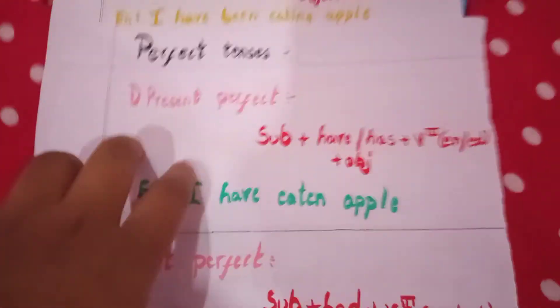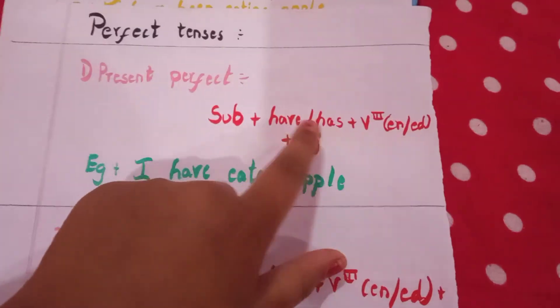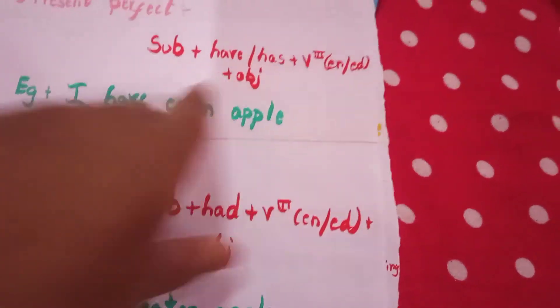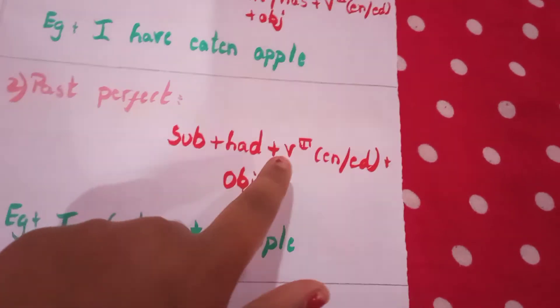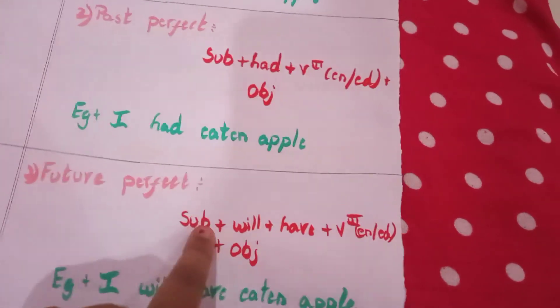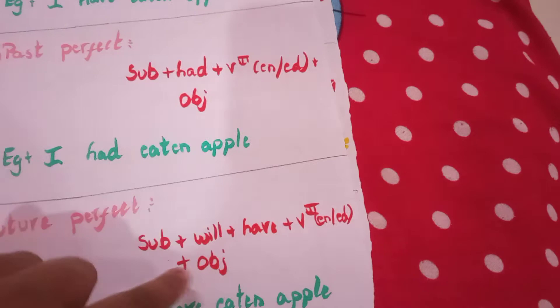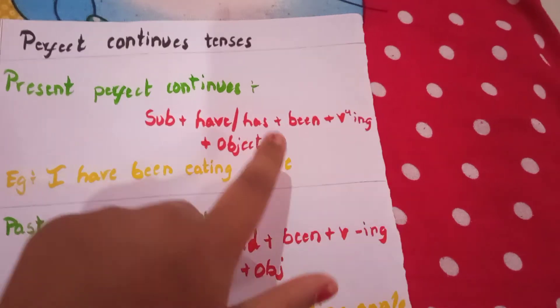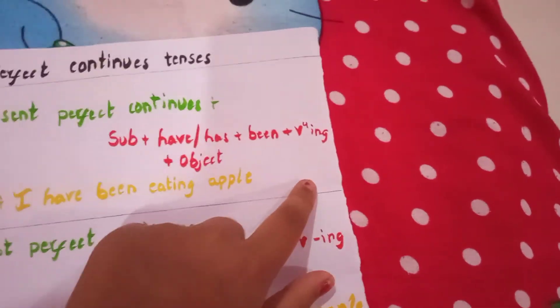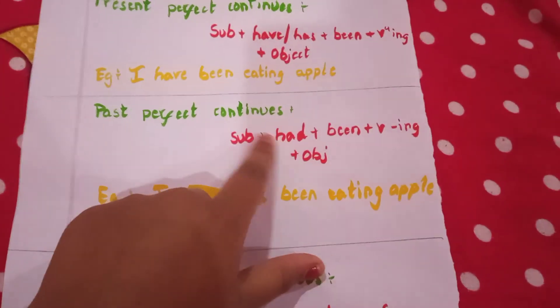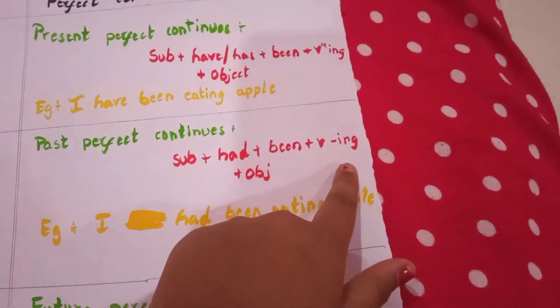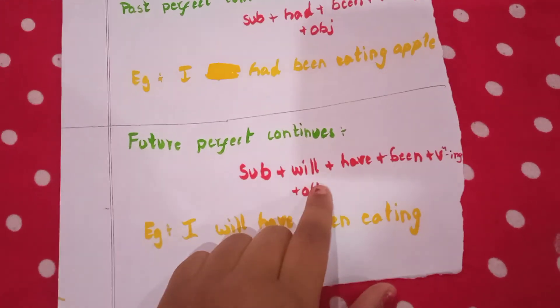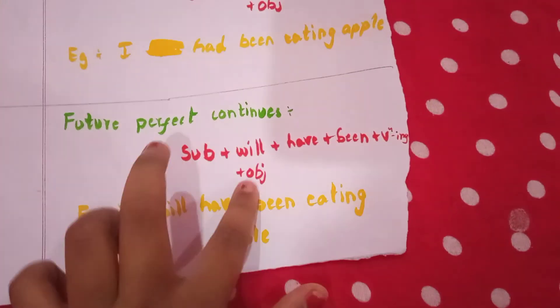Perfect tense — present perfect: subject plus have or has plus V3 plus object. Past perfect: subject plus had plus V3 plus object. Future perfect: subject plus will plus have plus V3 plus object. Future perfect continuous: subject plus will plus have plus been plus V4 plus object. Thank you.